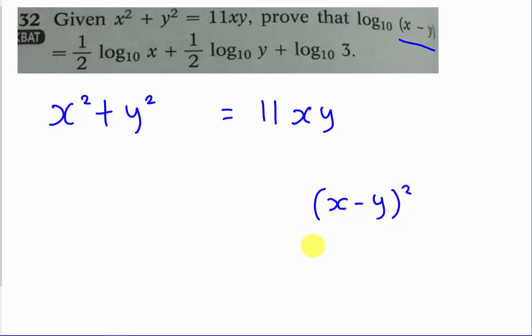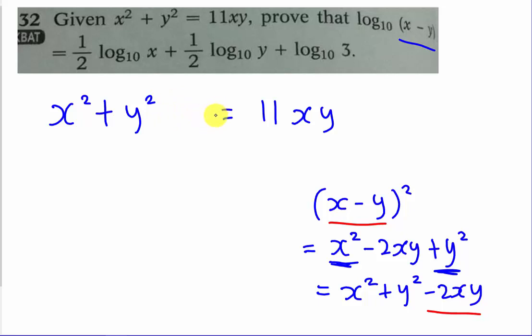So I start to think if x minus y squared, what I will have. I will have x squared minus 2xy plus y squared. From here I will see x squared plus y squared. If I rearrange this, it's x squared plus y squared minus 2xy.